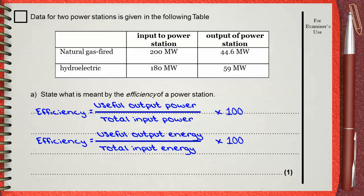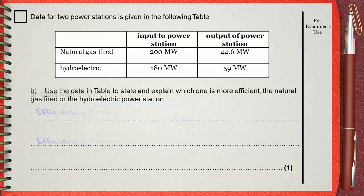Question b: use the data in the table to state and explain which one is more efficient, the natural gas-fired or the hydroelectric power station.